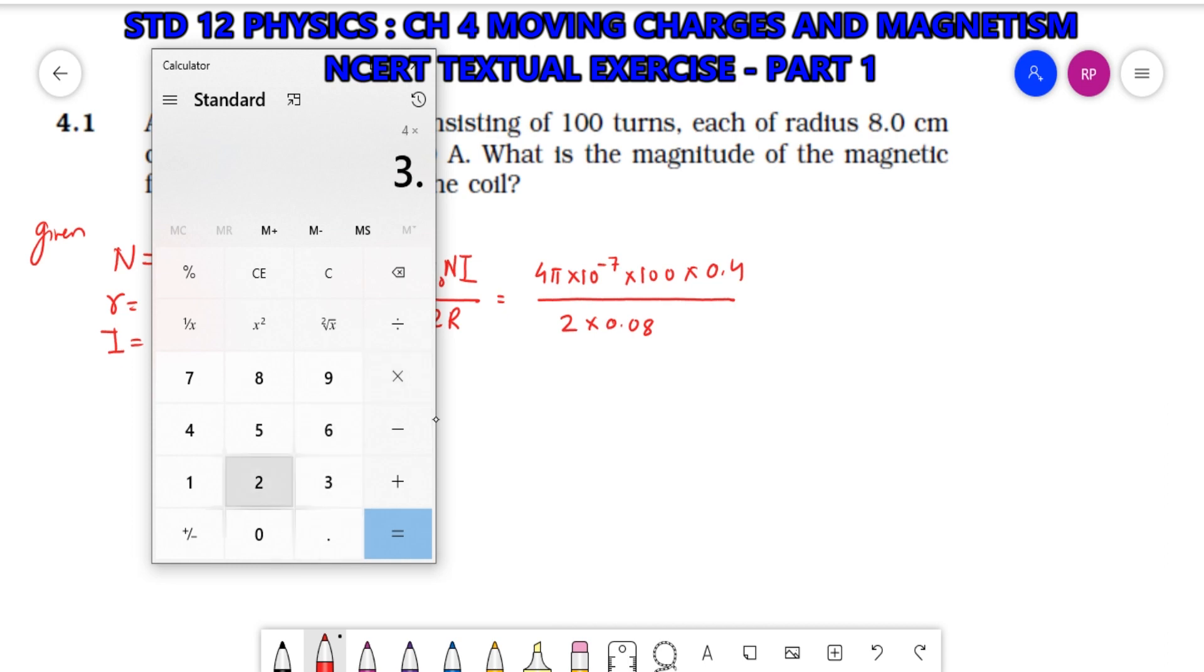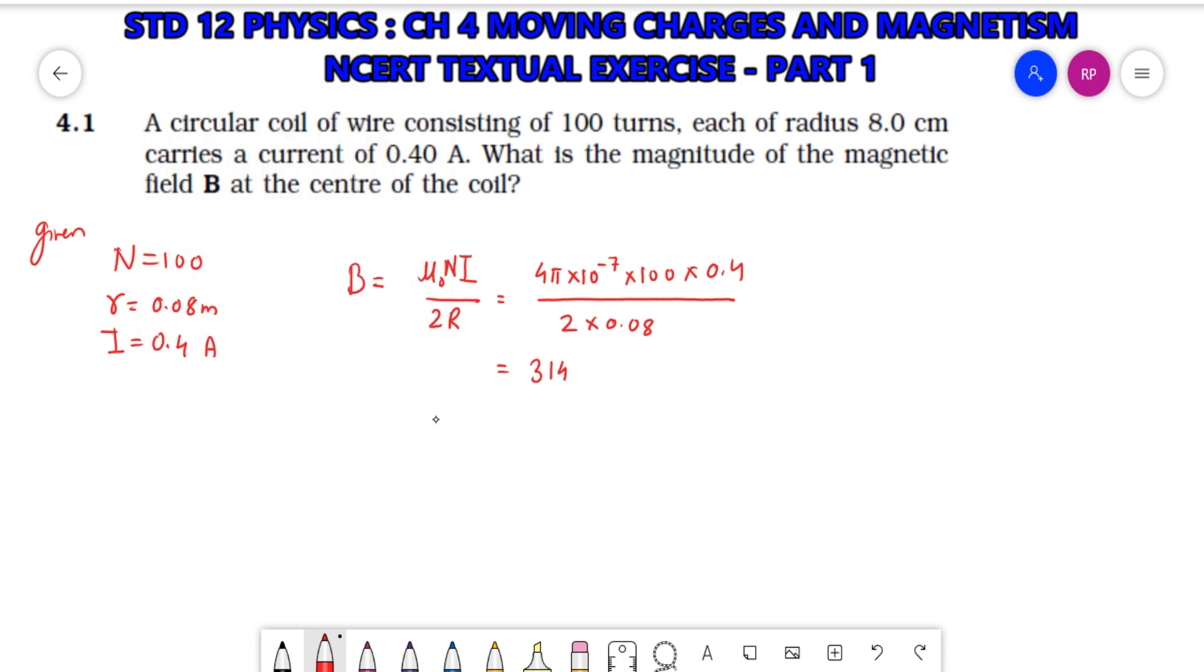Calculating: 4 into 5 means 3.14 times 100 times 0.4 divided by 2 divided by 0.08. Here we have 3.14 into 10 raise to minus 7 Tesla. I can also write it as 3.14 into 10 raise to minus 4 Tesla. This was 4.1, just note it down.